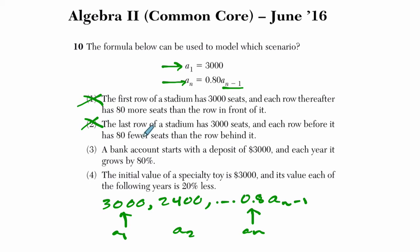And choice 2 is very similar. The last row of a stadium has 3,000 seats and then each row before it has 80 fewer seats. It's kind of a sequence that works in the other direction but you're subtracting a constant amount.